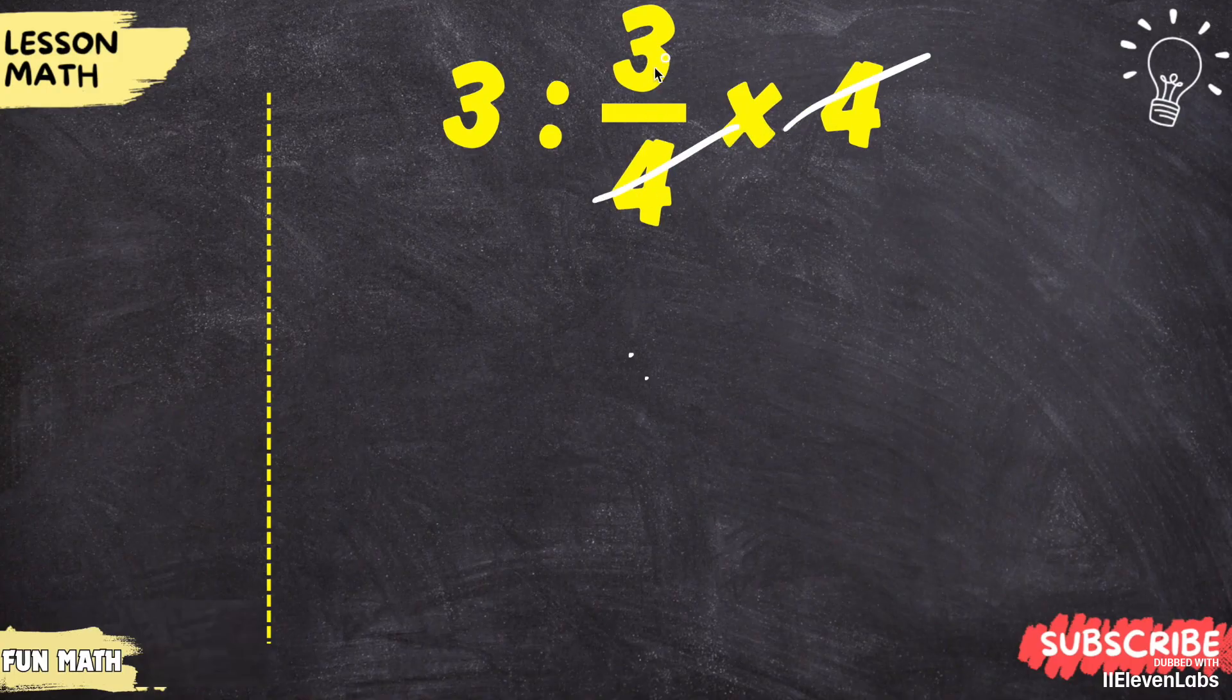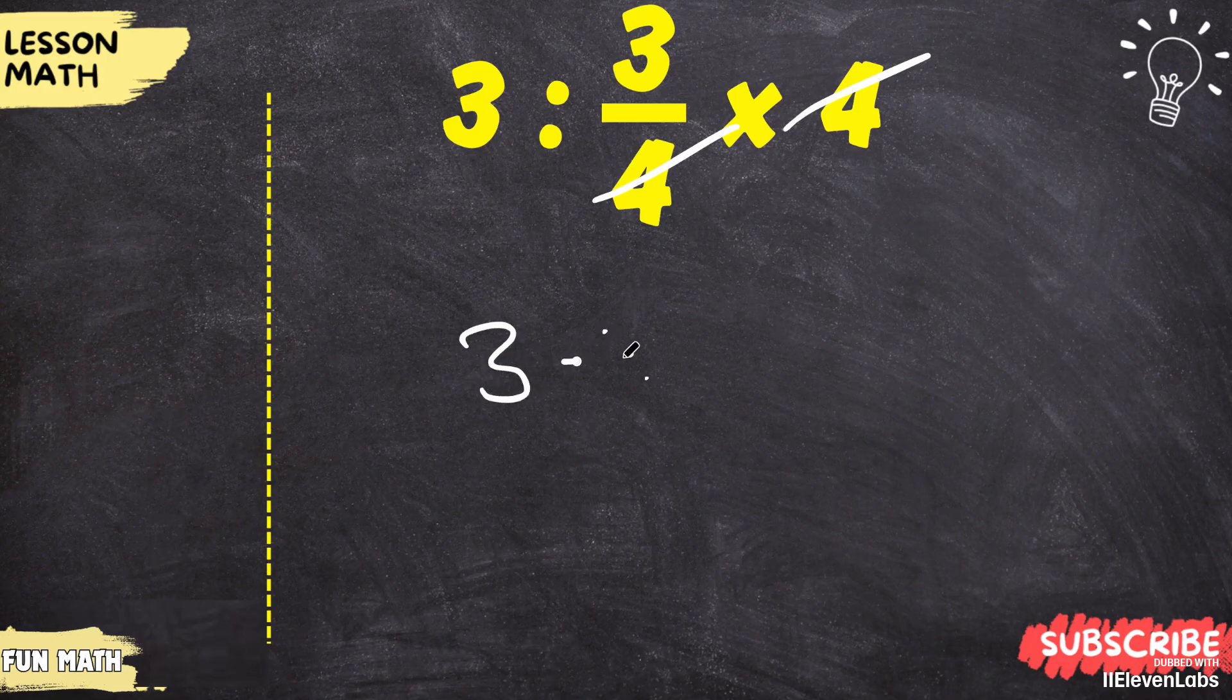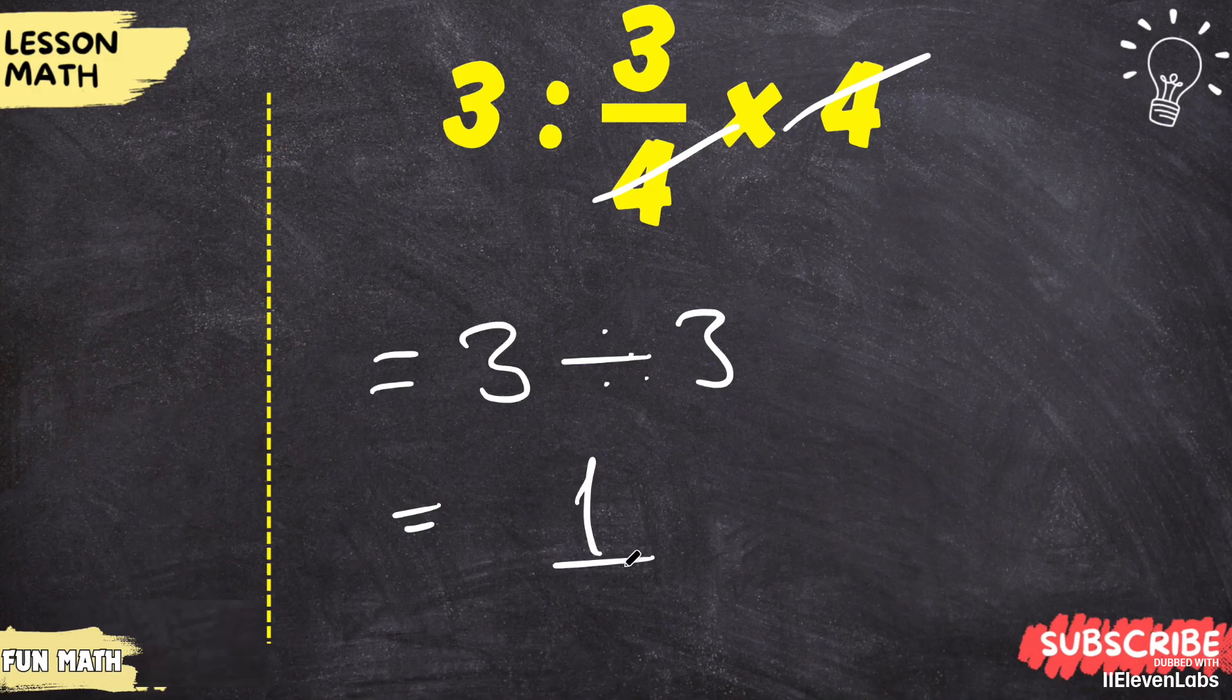Here, the fours cancel each other out. 3 divided by 3 remains. If you divide 3 by 3, you can say the answer is 1. But if you solve the question like this, you will make a mistake.